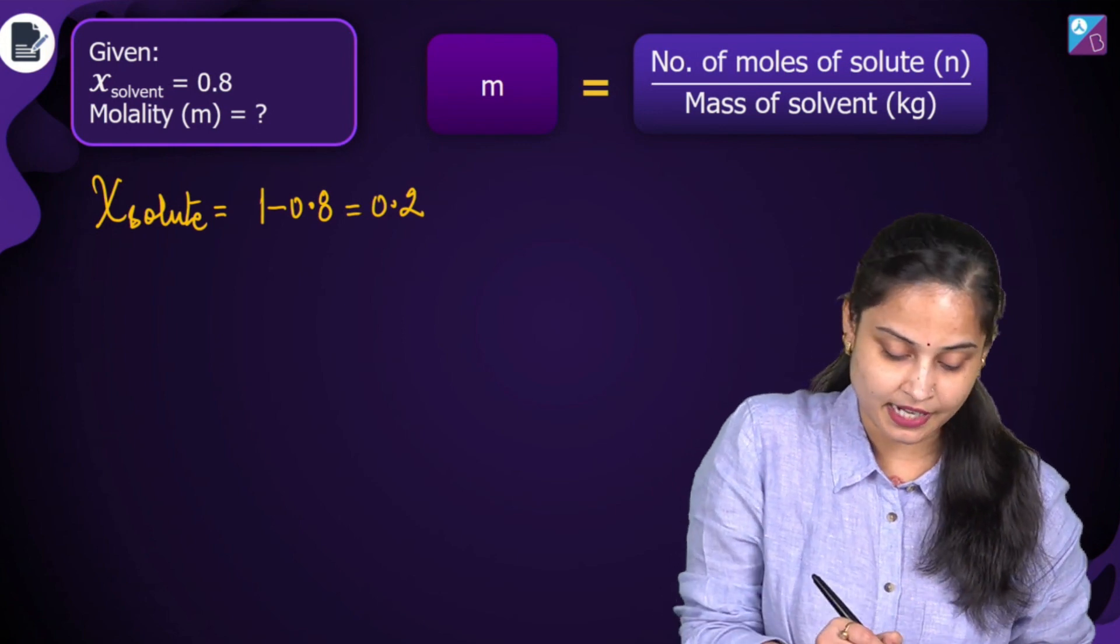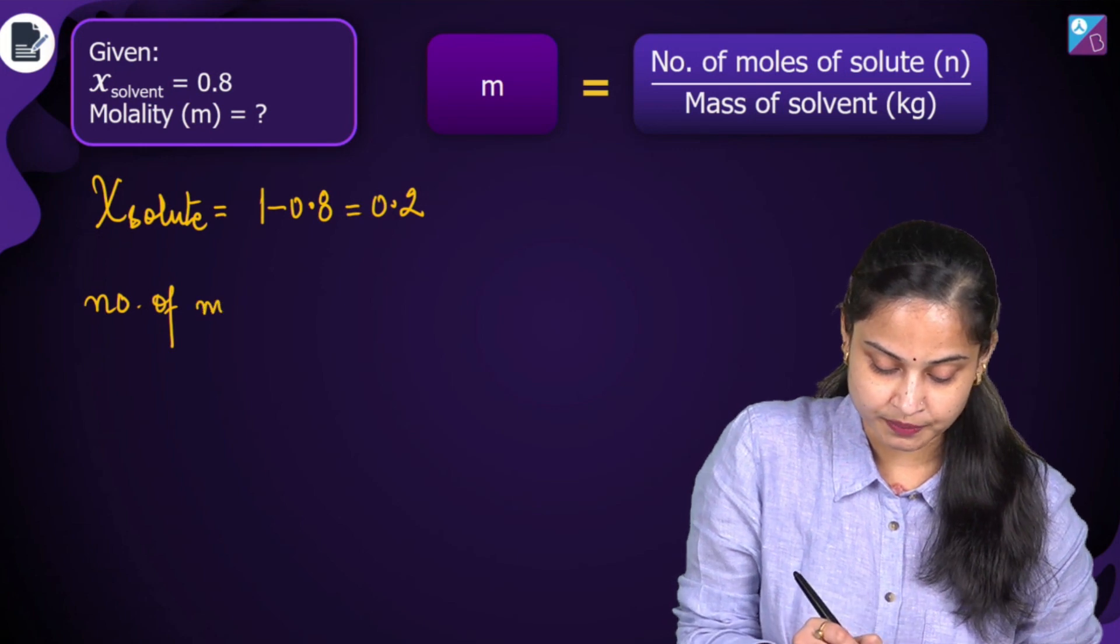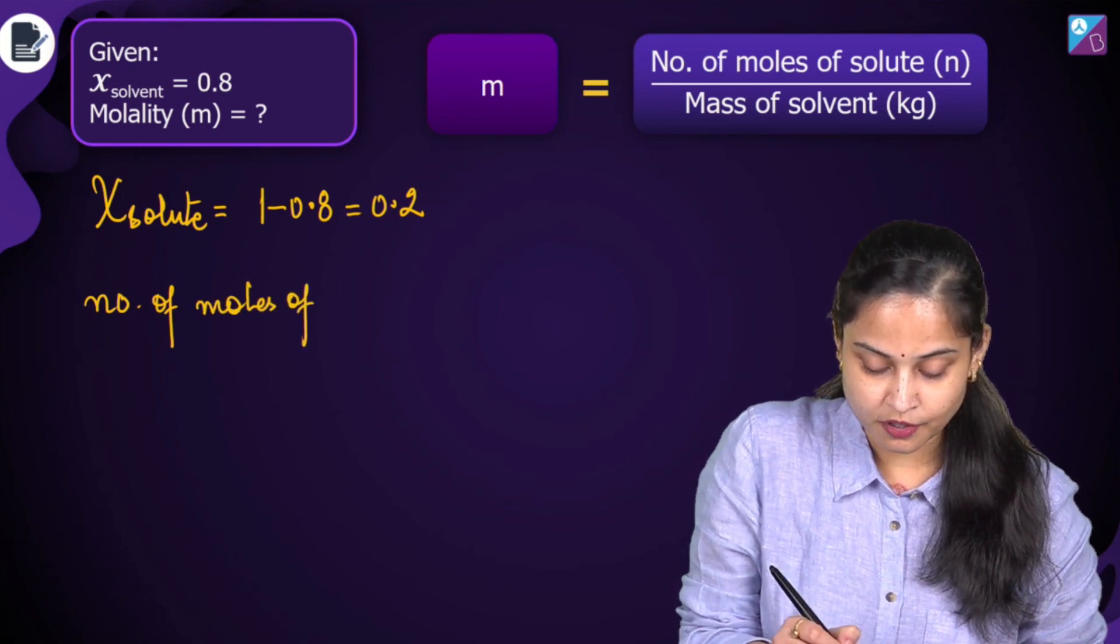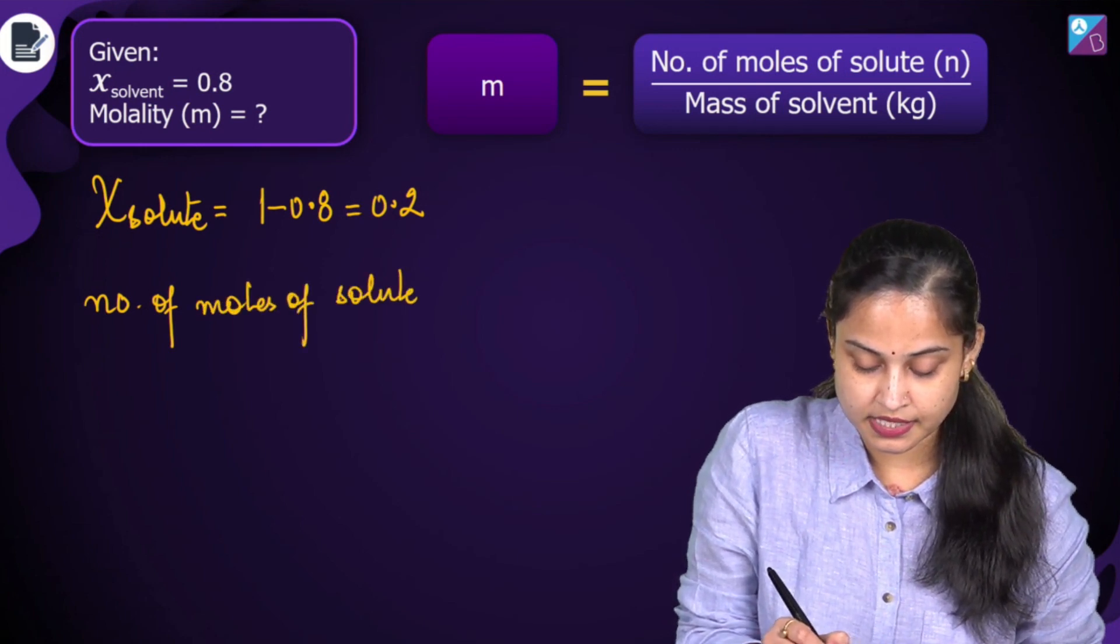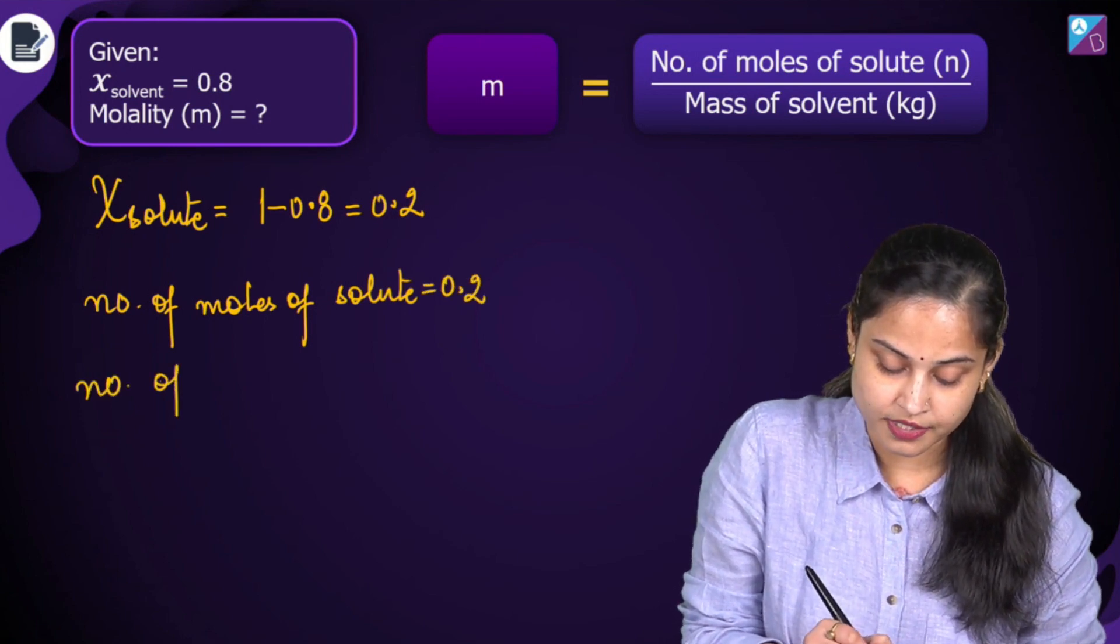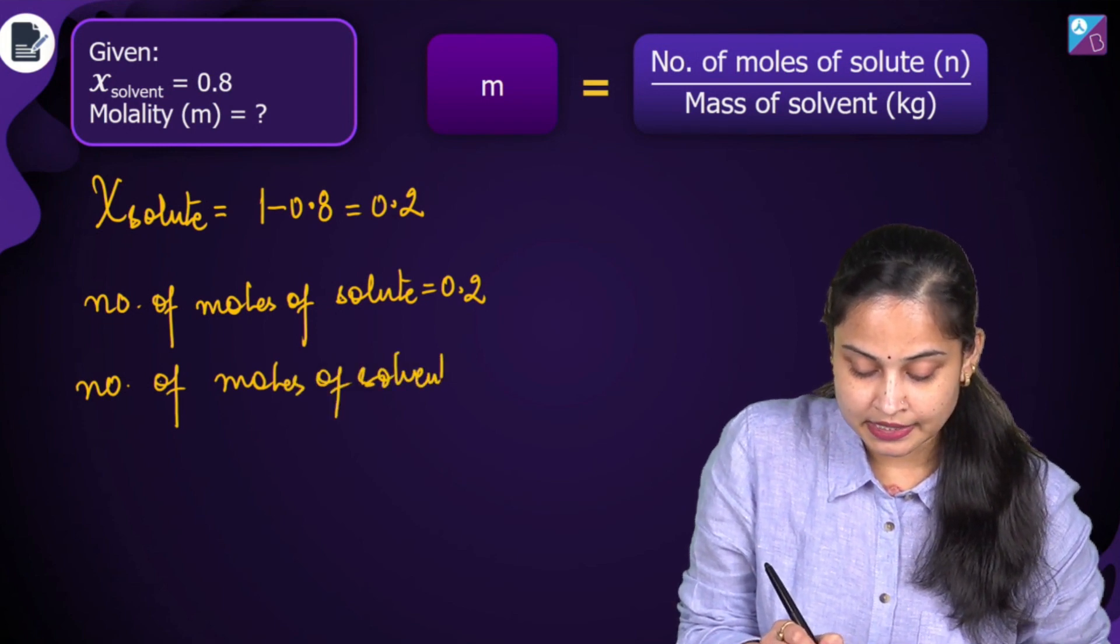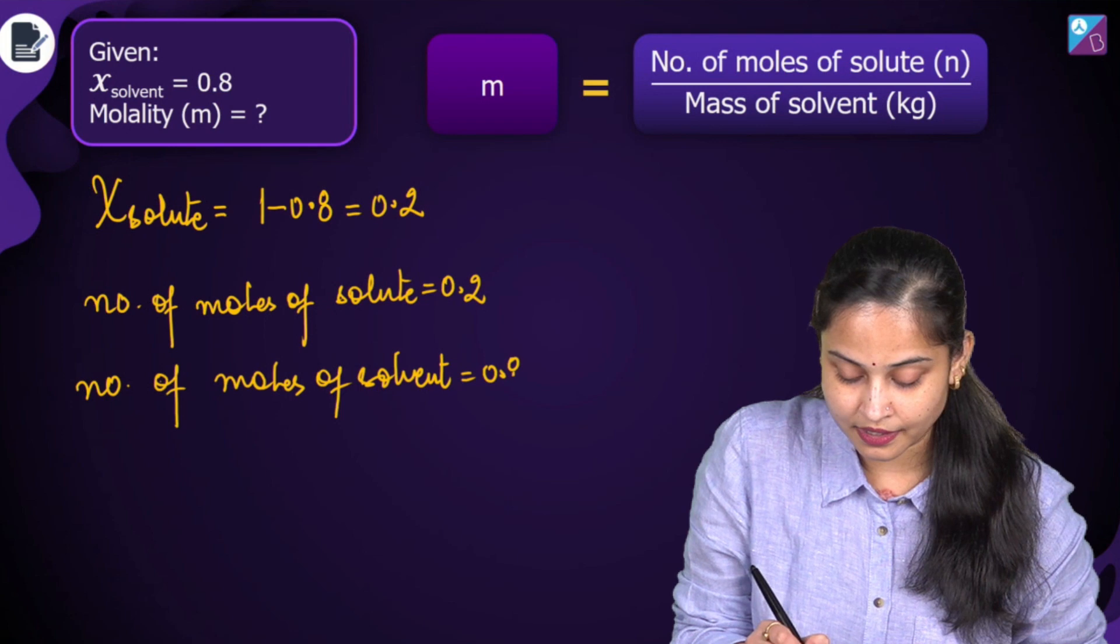So we can say that number of moles of solute is equal to 0.2 and what are the number of moles of solvent? Number of moles of solvent will be equals to 0.8.